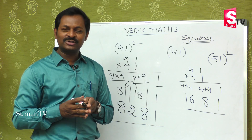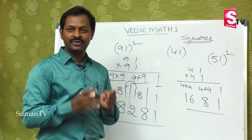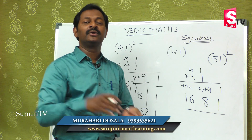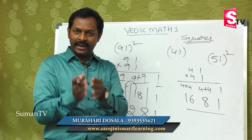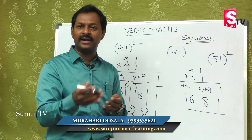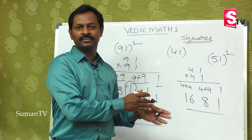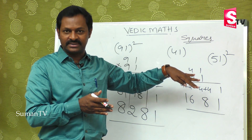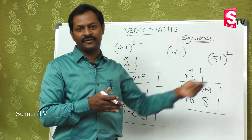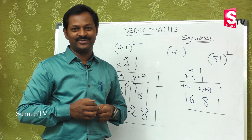So squares can be done in the simplest form. If numbers start with 1, we do: 1, add the digits, then multiply. If numbers end with 1, we do: multiply first, then add, then place 1. Hope you understood this class. Thank you, we will see you in the next class.